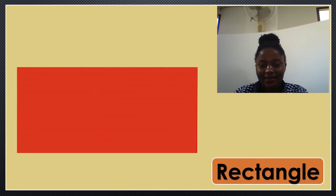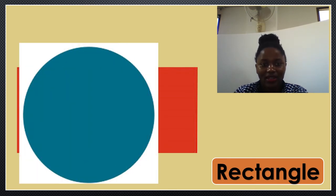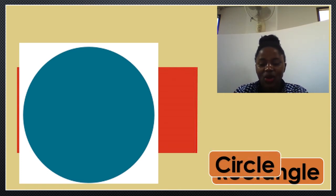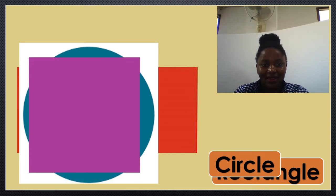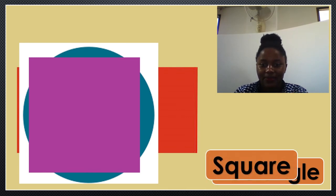Great. Next. How do we call this? Wow. It's a circle. Circle. Circle. What about this? Yes. It's a square. Square. Square.